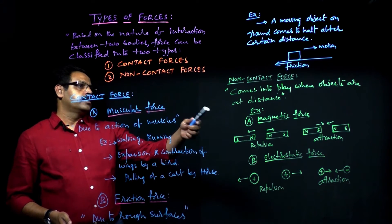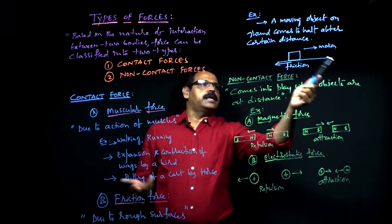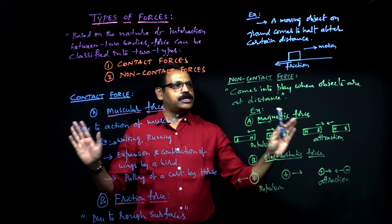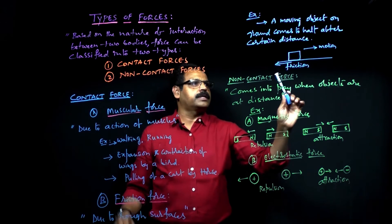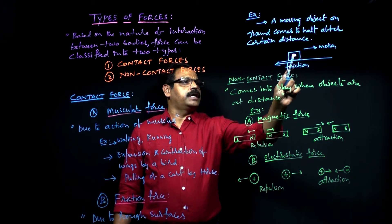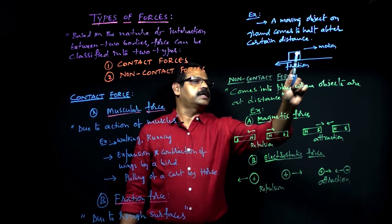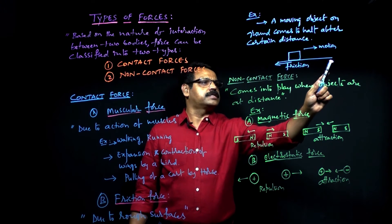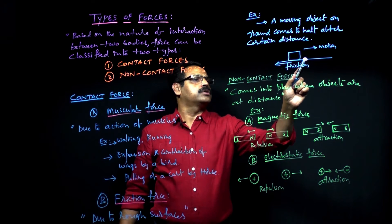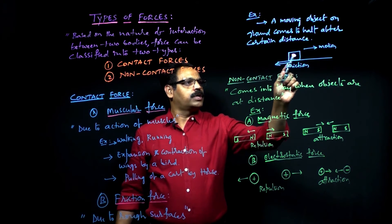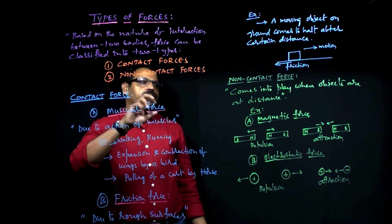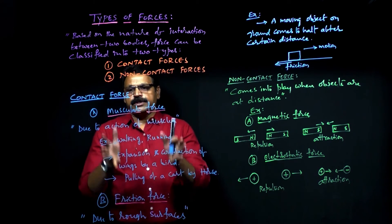As an example: whenever a vehicle is moving and you are not applying any force — no acceleration, no brakes — still, because of the roughness of the road, it exerts a friction on the vehicle which opposes its motion. That is the reason the vehicle will be stopped after traveling a certain distance because of this opposing force. That opposing force is the frictional force, and frictional force is a contact force because the force is exerted by the road on the body — the body and road are in contact. That is the reason frictional force also comes under the contact force category.